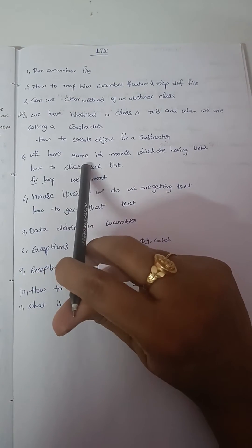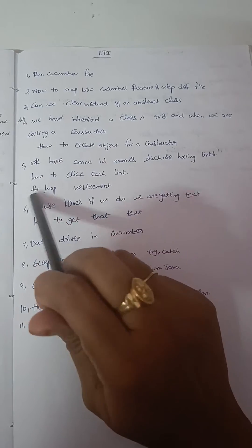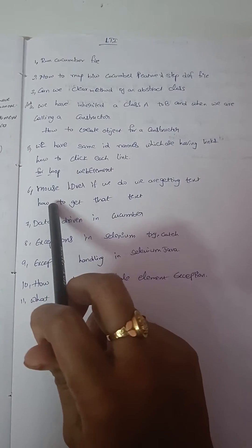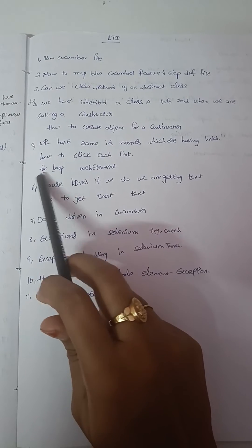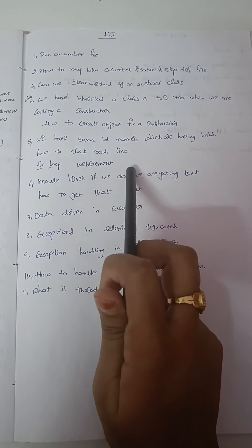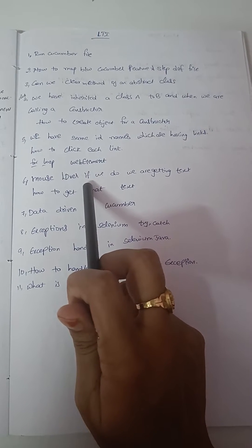Fifth question: we have same ID names which have links - how to click on each link? I've written small notes about the answers. Sixth question is about mouse hover.